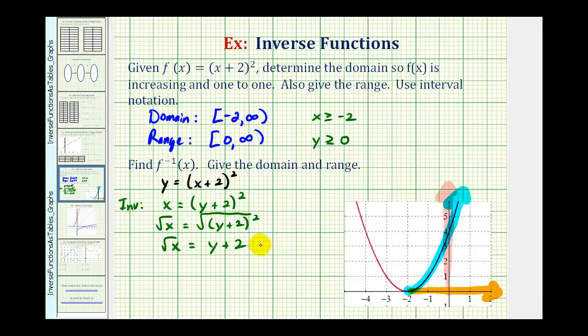Last step, we'll subtract two on both sides. We have the square root of x minus two equals y. This is our inverse function, solved for y. So we'll go ahead and replace y with f inverse of x. f inverse of x is equal to the square root of x minus two.